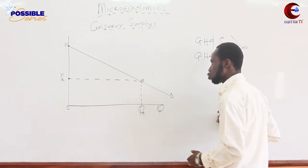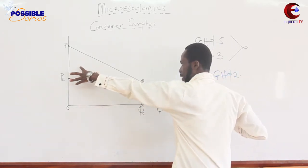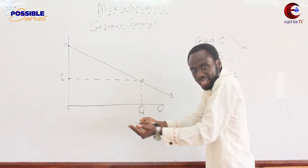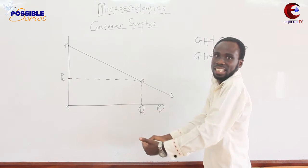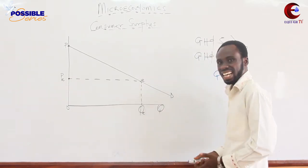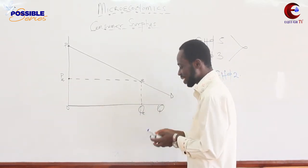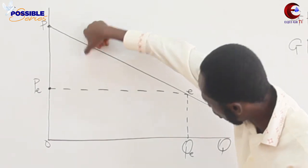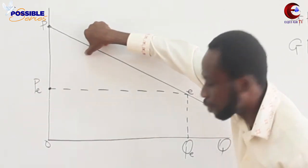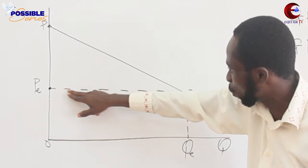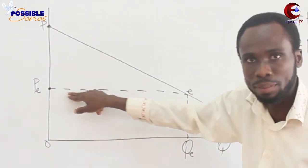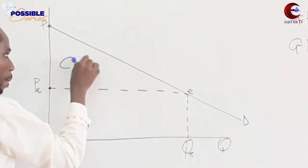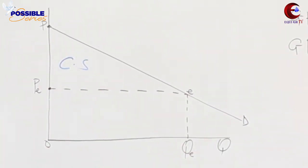The Consumer Surplus is this area on the diagram. Geometrically and diagrammatically, Consumer Surplus is the area below the Demand Curve — but above the Equilibrium Price. It is the area below the Demand Curve but above the Equilibrium Price.